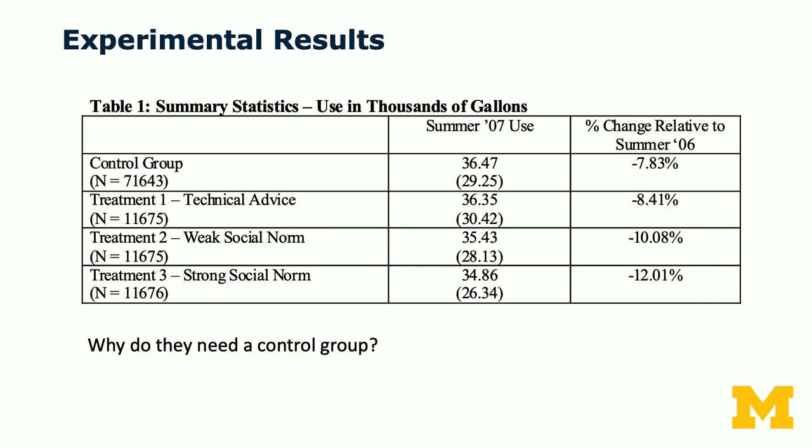You see the four experimental conditions — the control group and three different treatment groups. We have the summer 2007 usage in thousands of gallons, and the last column gives the percentage change relative to summer 2006. One question is why do they need a control group? The control group is there to control for time trends. For instance, if summer 2006 happened to be a very dry year, you would have a high baseline where everybody's using a lot of water. So the control group helps us control all the idiosyncratic changes not captured by the treatment.